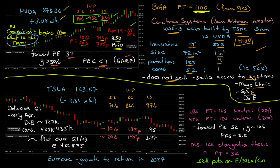It still has momentum, respectable revenues, and respectable growth that isn't going to go away in the next couple of quarters. The safe play I'd probably do is the 10-delta $715 put for $850.